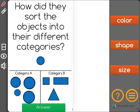How did they sort the objects into different categories? We have Category A and Category B, and our options are color, shape, or size.